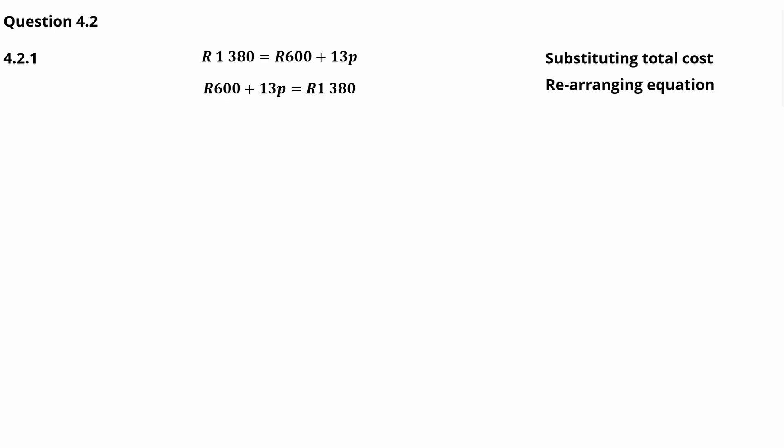This gives us the equation: 1380 rand equals 600 rand plus 13p. We can rearrange this so that 600 rand plus 13p equals 1380 rand. This does not change the equation — it is only done so that the unknown variable is on the left-hand side.